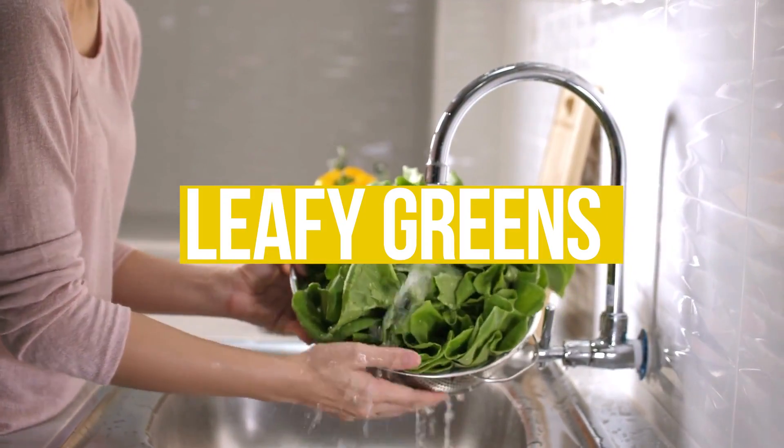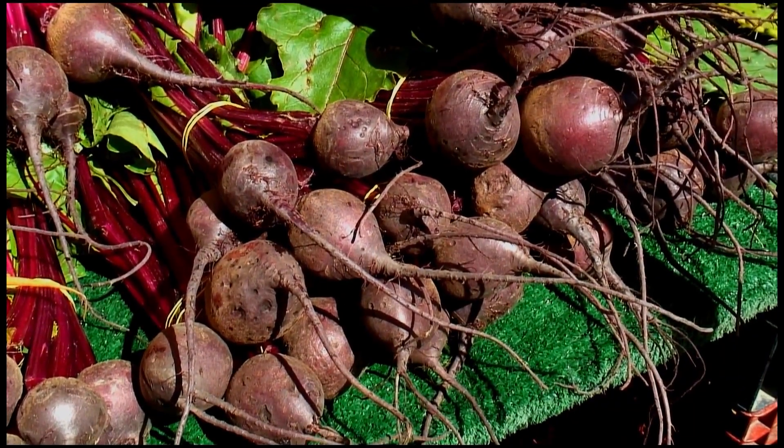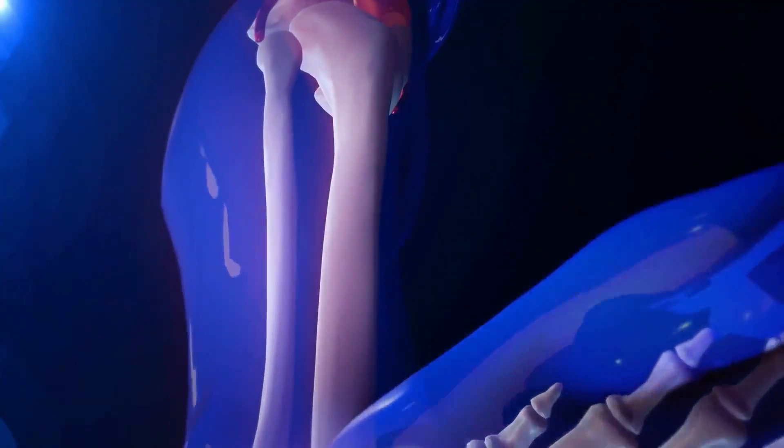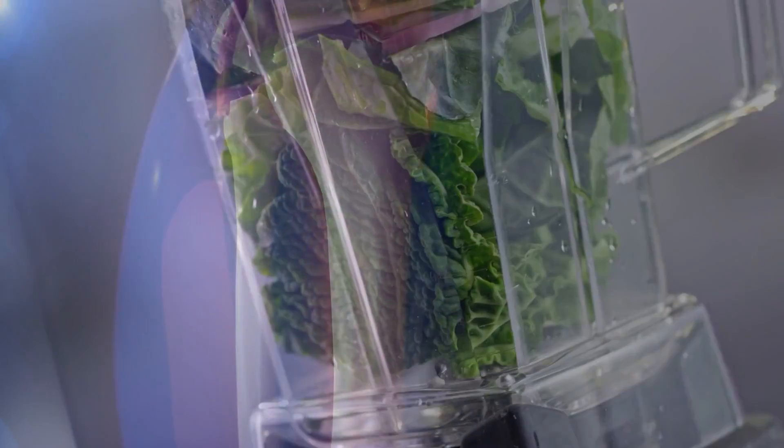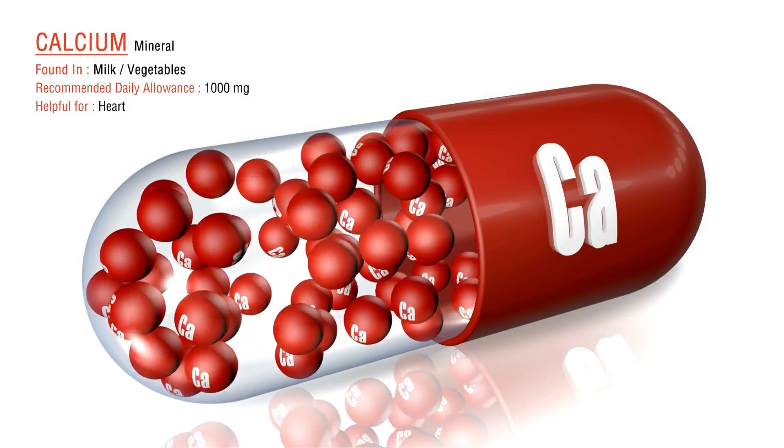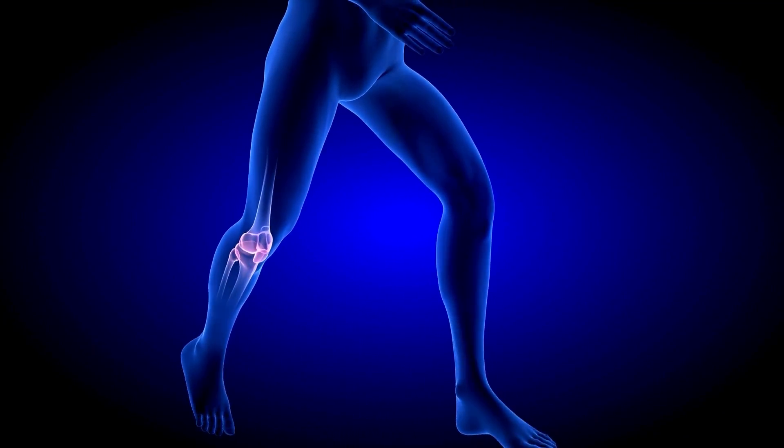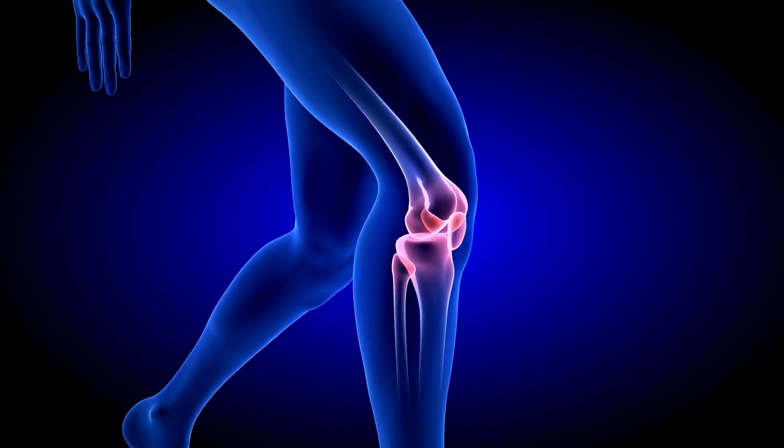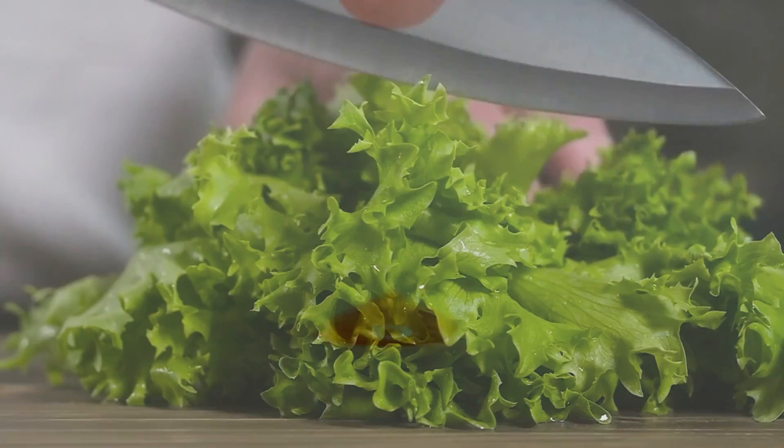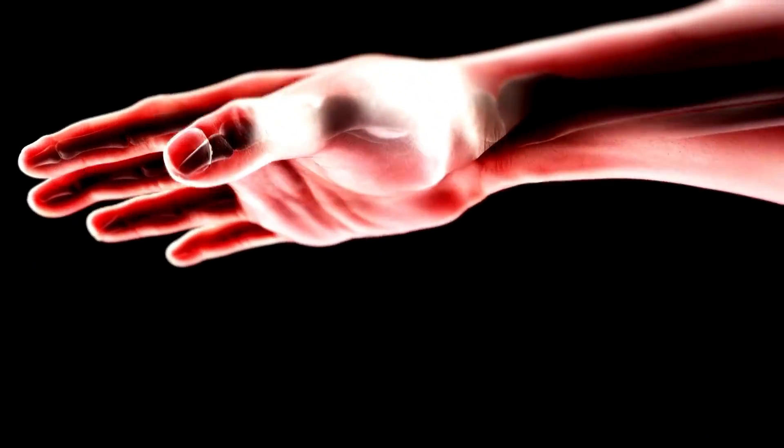So let's start with some leafy greens. Leafy greens like spinach, kale, and Swiss chard are excellent sources because they are very good for our bone health. Leafy greens are rich in calcium, a vital mineral essential for maintaining strong bones and preventing conditions like osteoporosis, which is more common in older adults. Vitamin D, also present in these greens, aids in calcium absorption and further supports bone health.